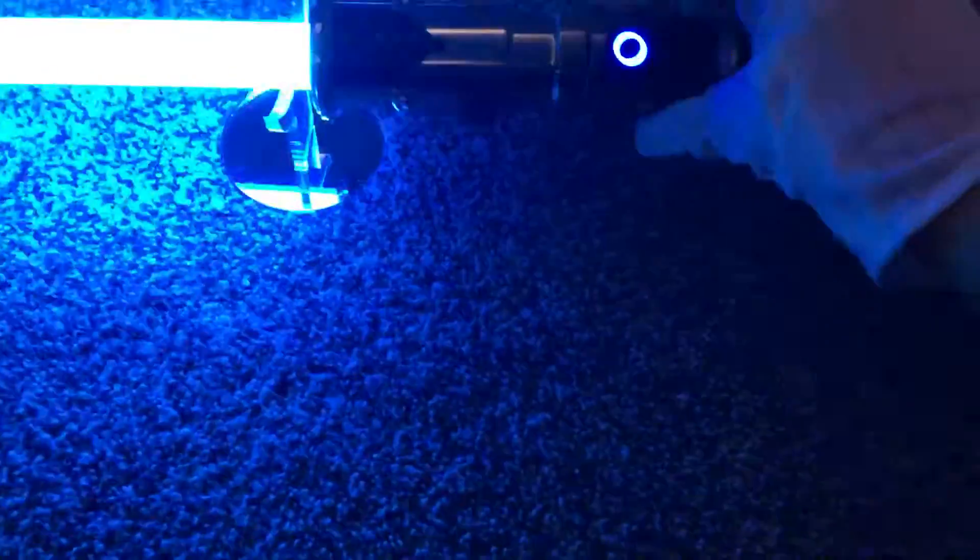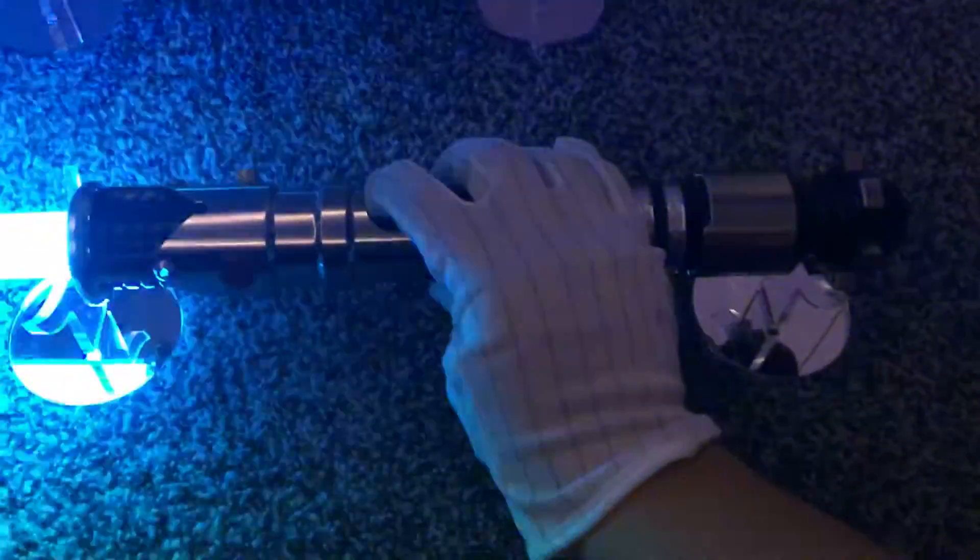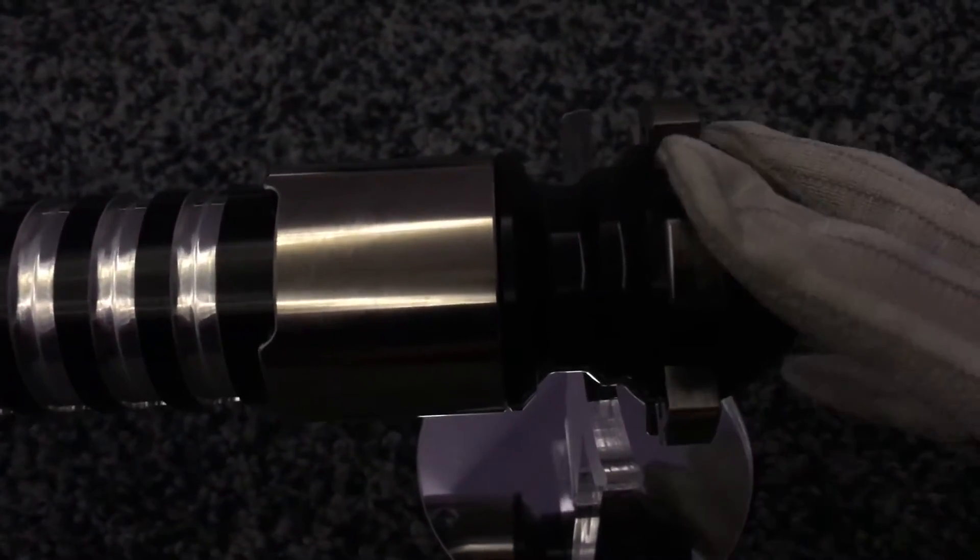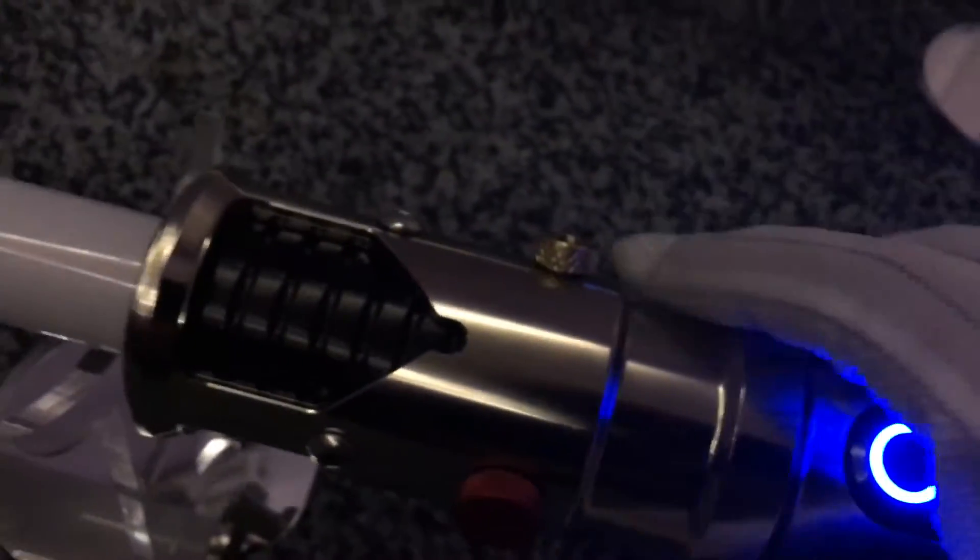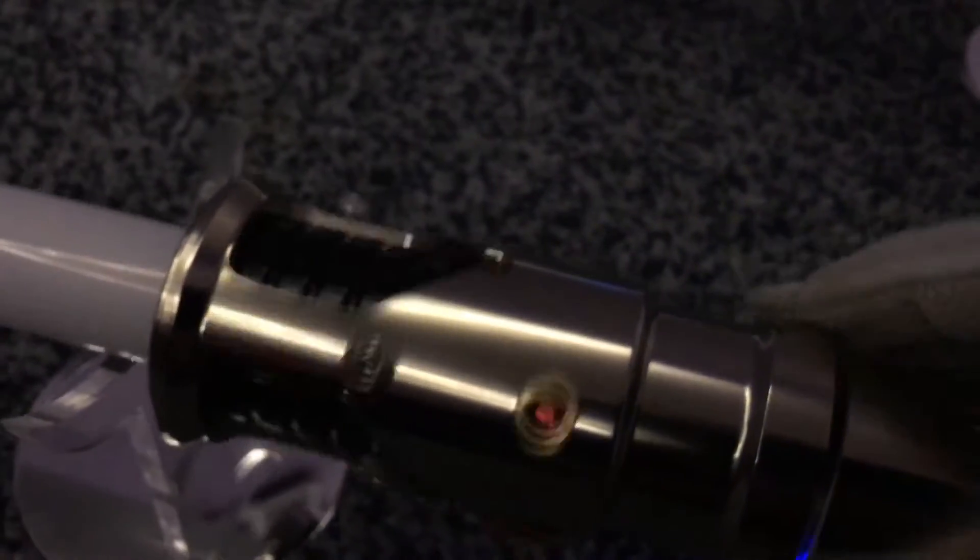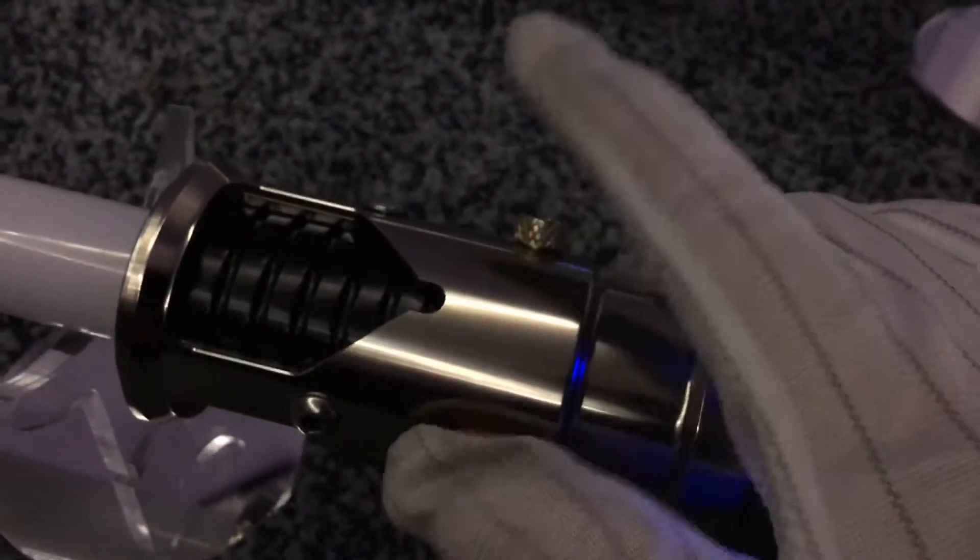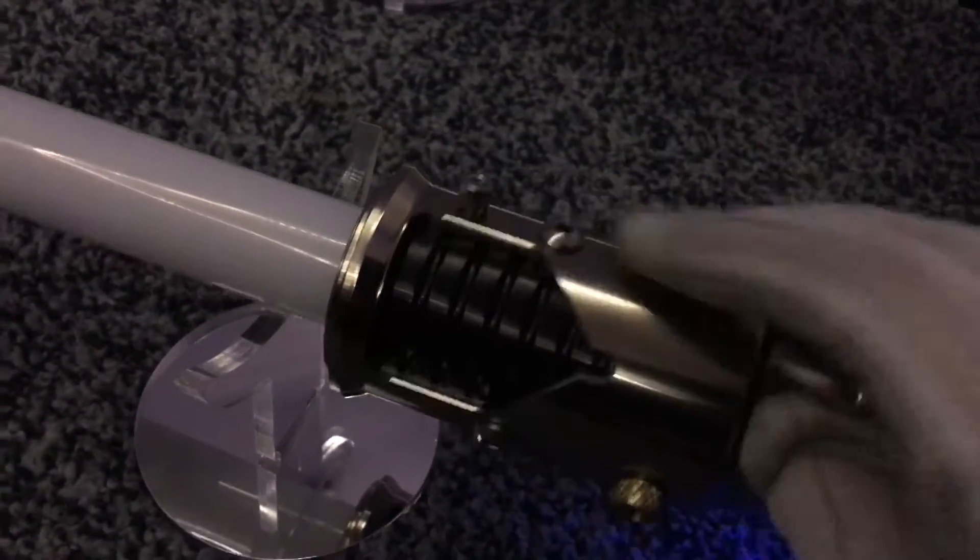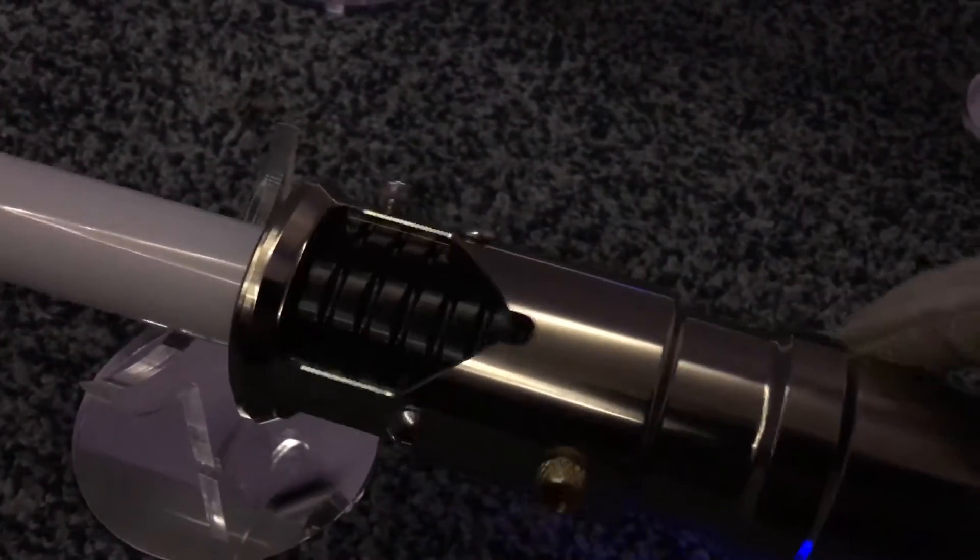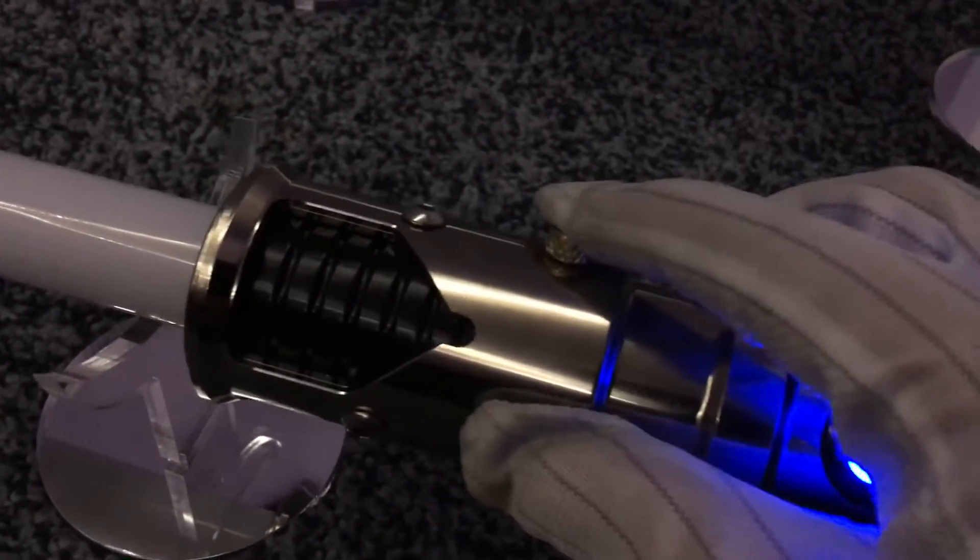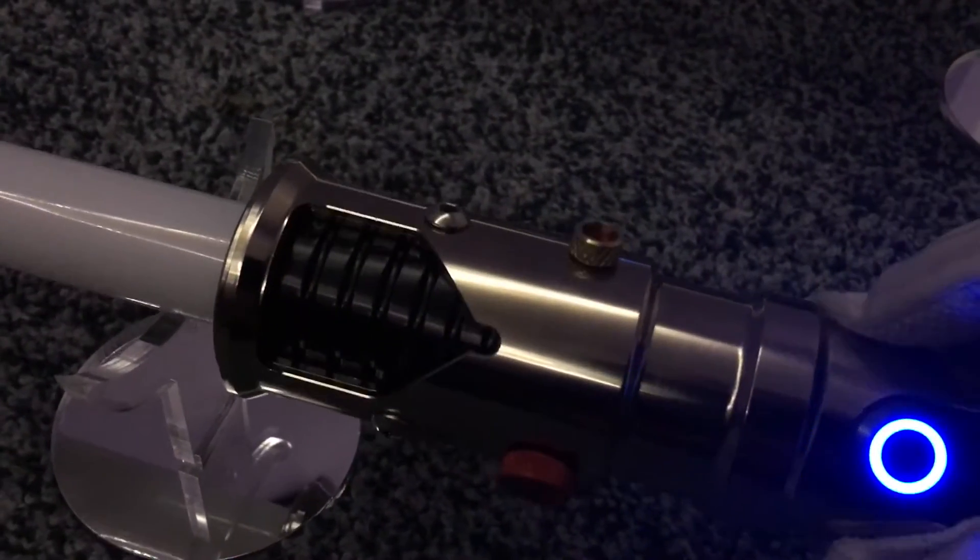And I ultimately went with the Guardian for a couple of key reasons. Now one, the MHS pommel breaks up into three pieces, so lots of mashup potential there. Second, three retention screws for extra safety. If your screws are long enough, they will penetrate into the emitter chamber and help hold your blade in place. I'll get to why these aren't exactly long enough, but potentially three retention screws. Another strong selling point.